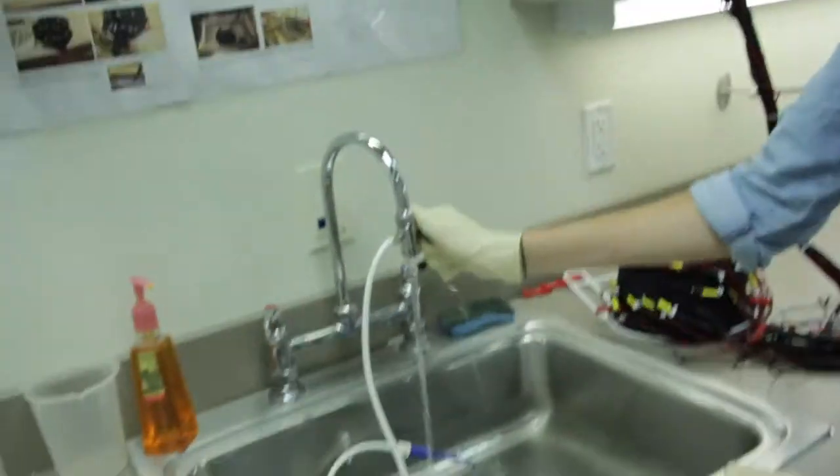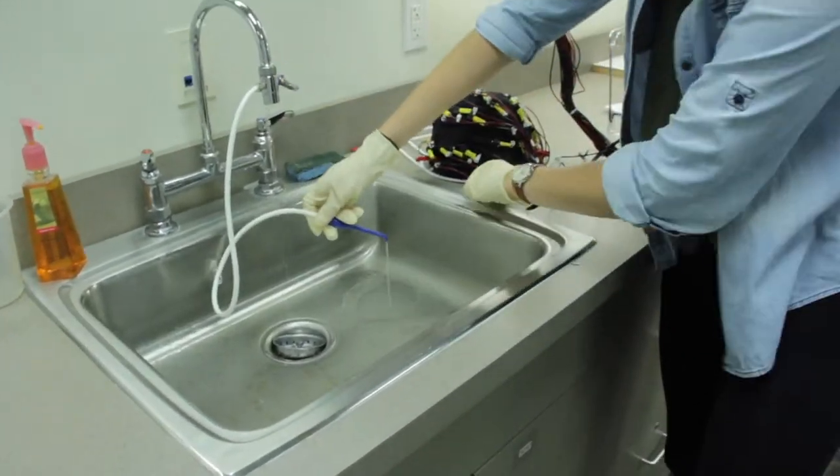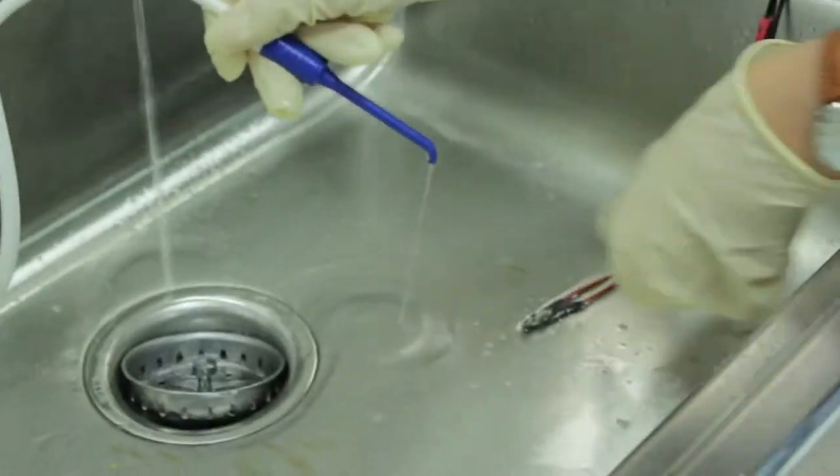After you have attached the red clips to the cap frame, turn on the water jet by moving the lever upwards. Use the jet to clean the reference and ocular electrodes.